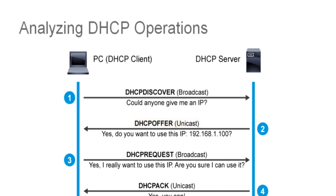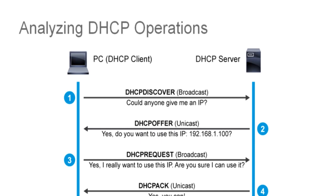When the laptop receives the DHCP offer, it responds with a DHCP request broadcast message to accept. This is actually a confirmation request to verify that it can really use the IP address contained in the offer. The process is not complete until the laptop receives an acknowledgment from the server. This brings us to the last step of the process, which is the DHCP ACK. The DHCP server responds to the DHCP request with a unicast DHCP ACK, which acknowledges the address assignment and includes any other configuration parameters to be passed along to the laptop. Once received, the DHCP acquisition process is now complete.